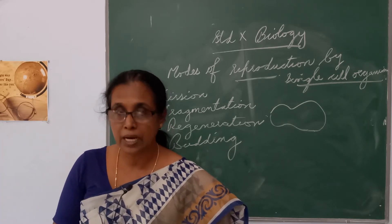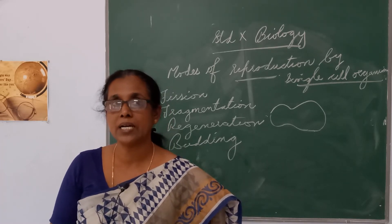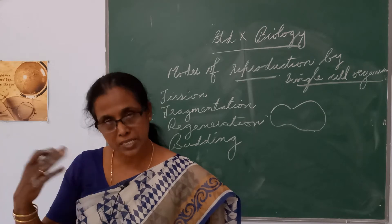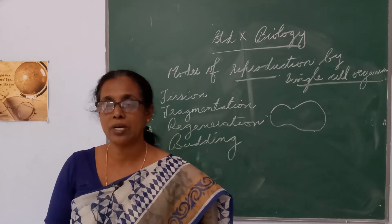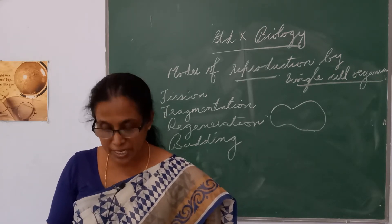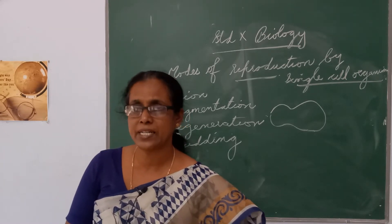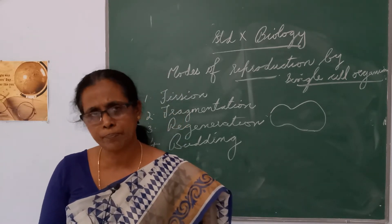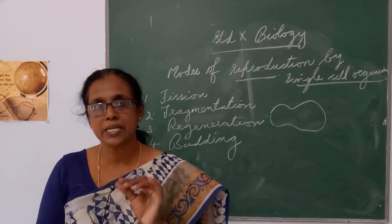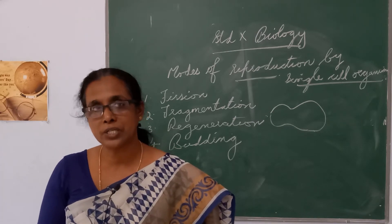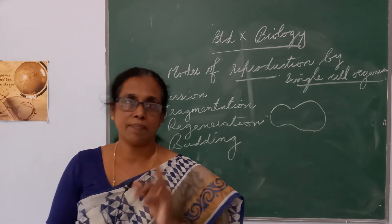Malaria is transmitted by the mosquito but it is caused by Plasmodium. It is transmitted by the Anopheles mosquito. The division takes place inside the body — the Plasmodium divides into a number of daughter cells and each cell grows into a new individual.